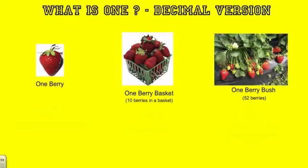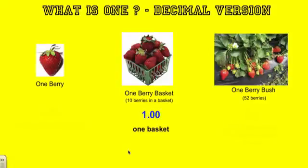Now we're going to look at how we interpret one from a decimal standpoint. For this example, we're going to look at a basket of strawberries. There are 10 berries in the basket — similar to a basket you'd buy at the grocery store. We're going to consider this as our one. So 10 out of 10 berries in the basket, or one basket, is our one — or 1.0, or 1.00.